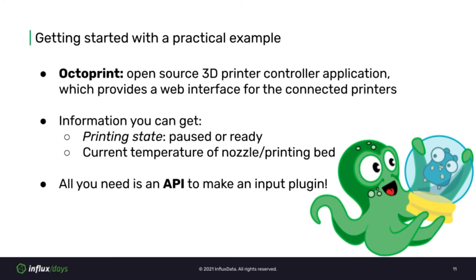While OctoPrint has a web interface to display this information already, by capturing this data you have control to display and store it in more creative ways. My main motivation was that the remaining filament number was kind of hidden in the user interface, and I wanted to make it more obviously displayed, because too many times have I run out of filament in the middle of a print. This project example will hopefully help you see the possibilities for external plugins — all you really need is access to an API to begin using Telegraph to gather data from it. While other people might find this plugin useful, it's a bit of a niche use case and doesn't make sense to live inside the main Telegraph project.